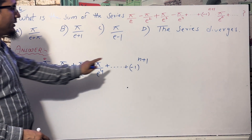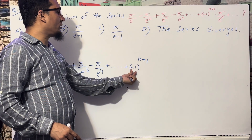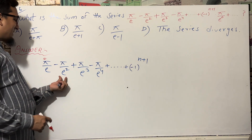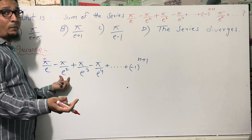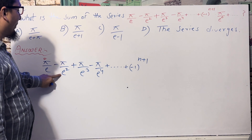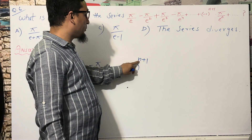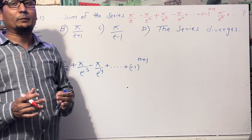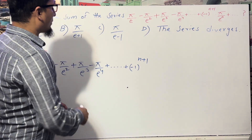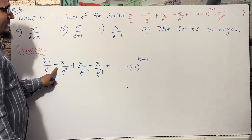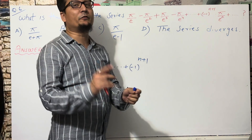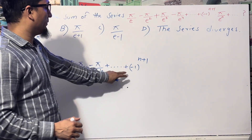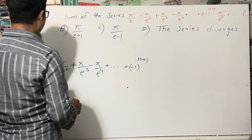To verify the sign pattern: for the first term, put n = 1, so (−1)^(1+1) = (−1)² = +1, which is positive — correct. For the second term, n = 2, so (−1)^(2+1) = (−1)³ = −1, which is negative, since odd powers of −1 are always negative. So (−1)^(n+1) correctly gives the sign of each term.